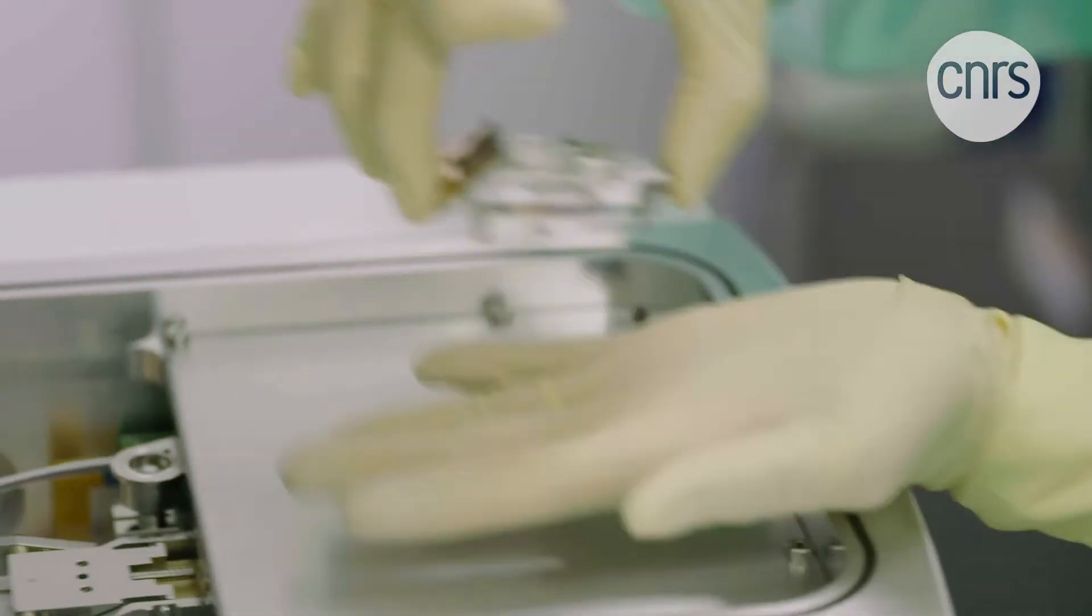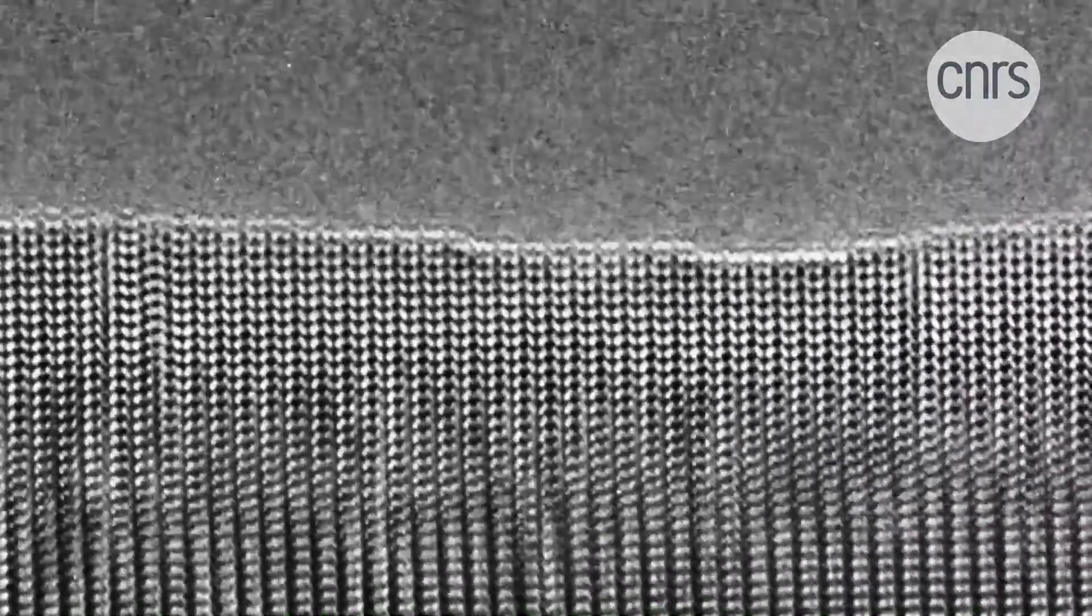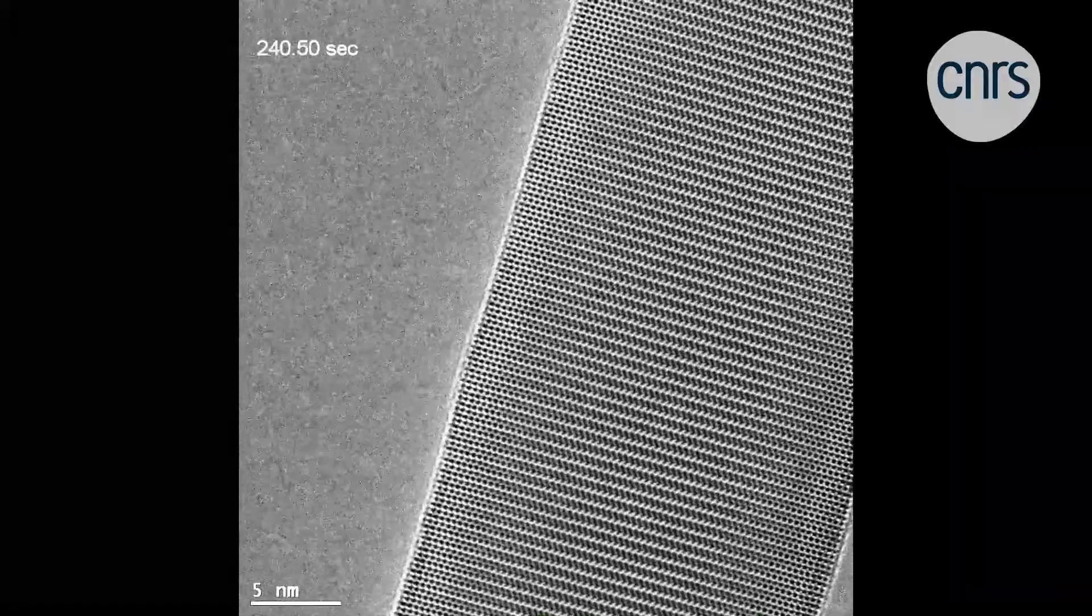In these rooms, electronic microscopes make it possible to observe the components that have been sculpted. These images taken at regular intervals show the growth of these new materials on the substrate. Slowly, the layers superimpose to create new structures that can later be modeled and enter the composition of new objects visible to the naked eye this time.